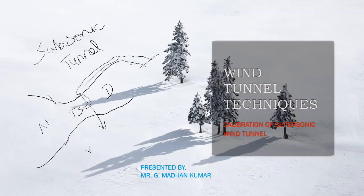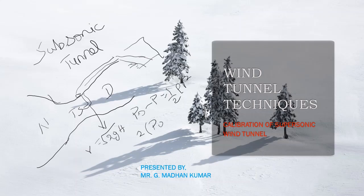From the pitot-static tube, we are estimating the velocity using the formula. Through the inclined manometer, we are measuring the readings of the increase in static pressure via the wall surface of the venturi section. We are using Bernoulli's principle, and from this we estimate velocity: v = √(2(P0 - P) / ρ), where P0 is total pressure, P is static pressure, and ½ρv² is the dynamic pressure.